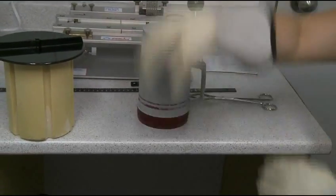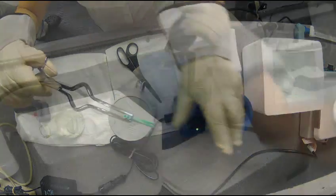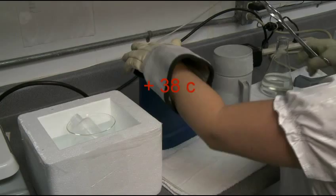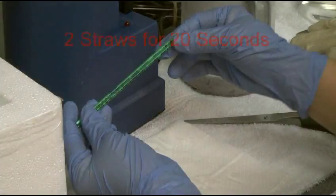Remove two straws from the nitrogen storage container and immediately transfer the straws to the thaw unit at plus 38 degrees Celsius. Thaw semen straws for 20 seconds and remove.